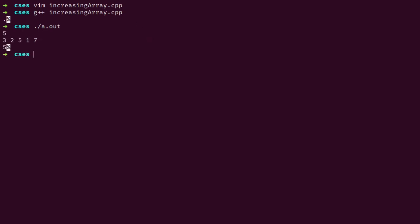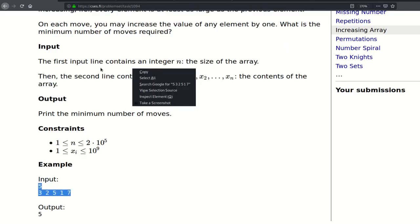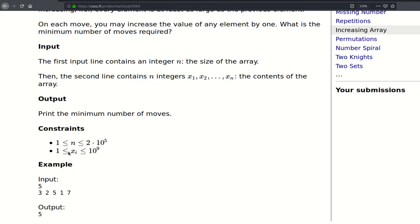Hold on a second, this might overflow. Because here, if let's say the first element is 10 to the 9th and then all other elements are equal to 1, then there would be a difference of 10 to the 9th minus 1 added at each position.